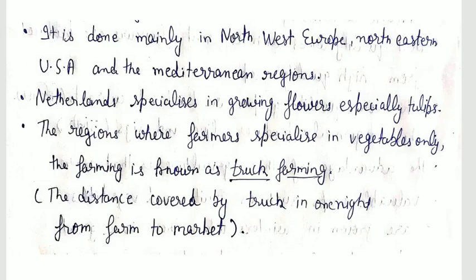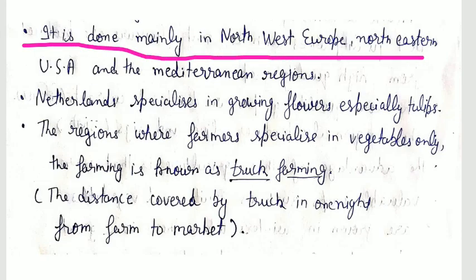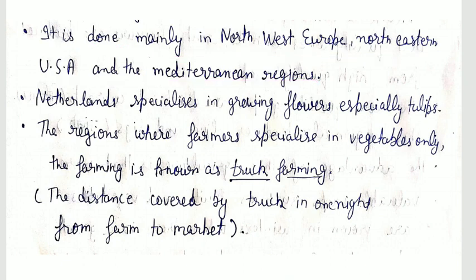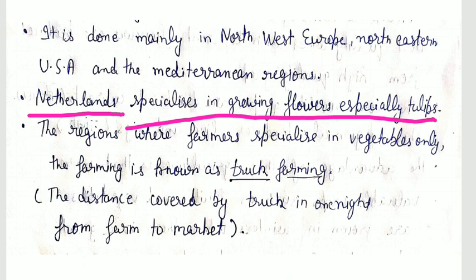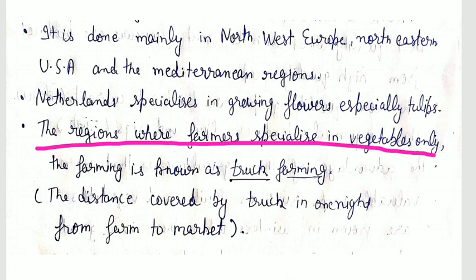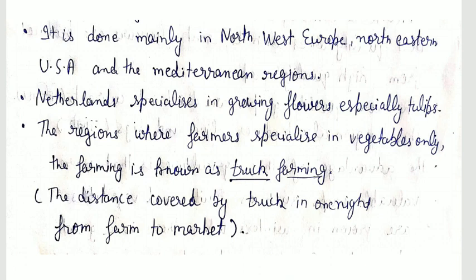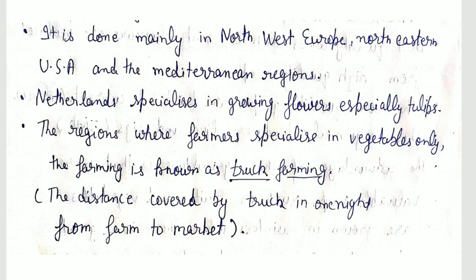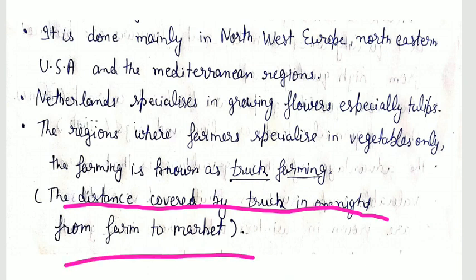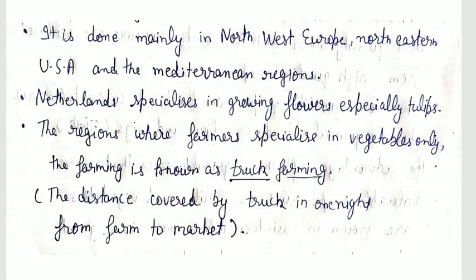Market gardening is done mainly in northwest Europe, northeastern USA, and Mediterranean regions. Northern lands specialize in growing flowers, especially tulips. The region where farmers specialize in vegetables only, the farming is known as truck farming — named after the distance covered by a truck in one night from farm to market.